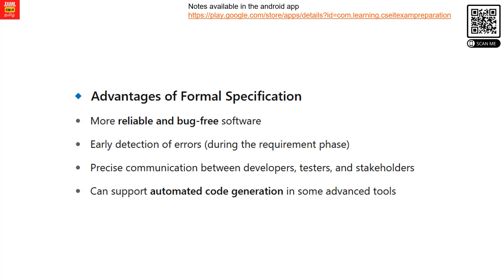Advantages of formal specification include more reliable and bug-free software. If a flaw is found at the representation level, it is easy to fix before coding. It also enables precise communication between developers, testers, and stakeholders, and can support automated code generation in some advanced tools.